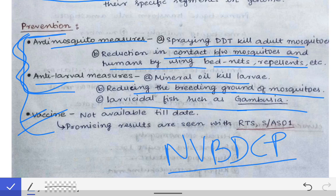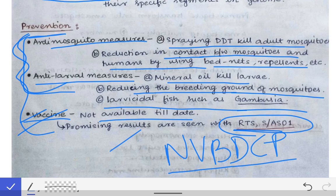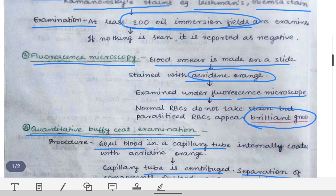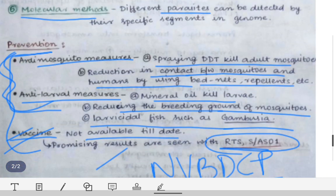There is currently no approved vaccine available for malaria, but promising results are being seen with the RTS,S/AS01 vaccine. This concludes the lecture on malaria, covering lab diagnosis and prevention and control.